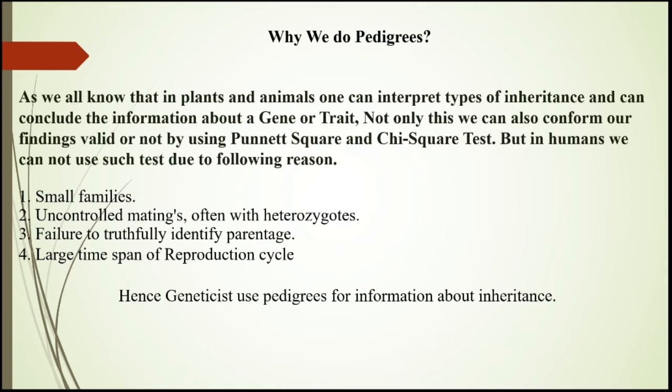Third is failure to truthfully identify parentage — there are some orphan children whose parents are unknown, so you cannot prepare Punnett square data or calculate their ratios. Fourth is the large time span of the reproductive cycle — in our whole life span we can produce up to 10 reproductive cycles, meaning up to 10 children maximum. These are certain limitations, hence geneticists use pedigree to give the type of inheritance.